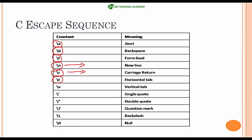\v is useful for providing vertical tab spaces. \' is useful for including single quotes in printf. \" is useful for including double quotes in printf. \? is useful for including a question mark in your printf statement. And \\ is used for including a backslash in your printf statement.